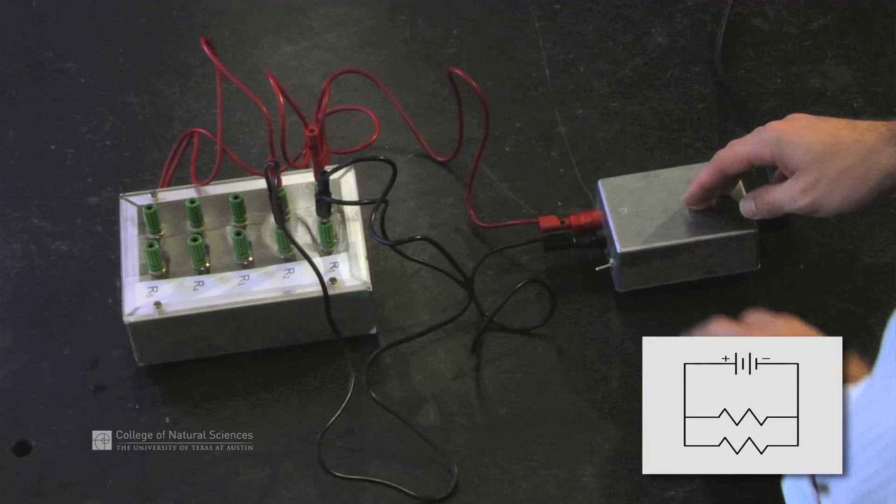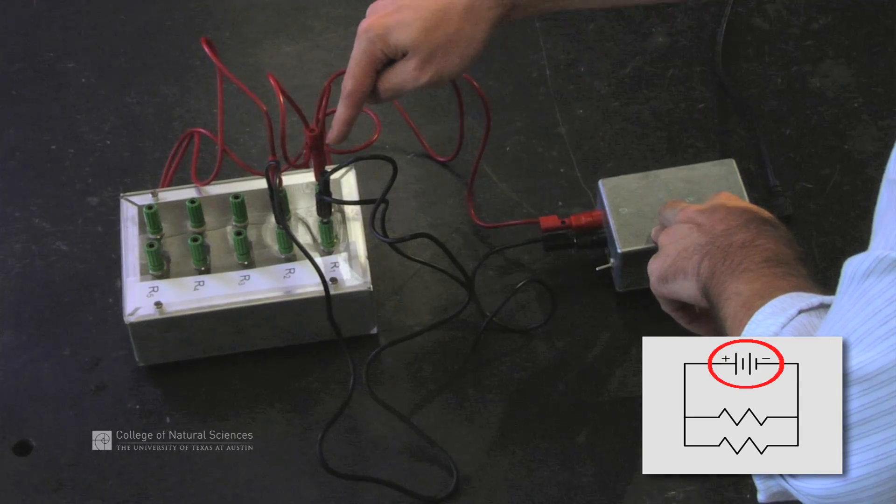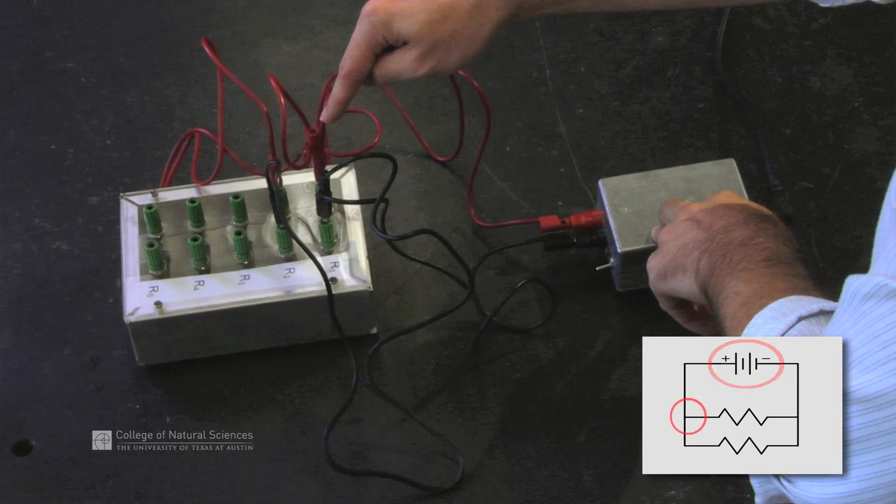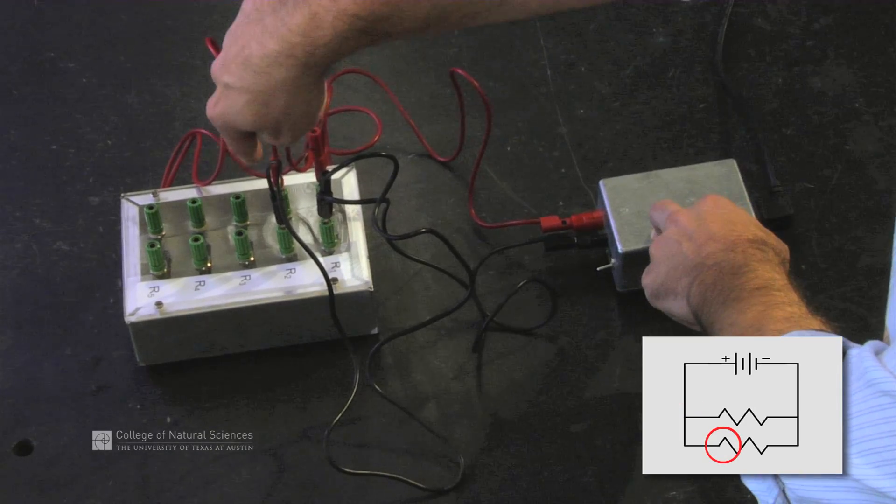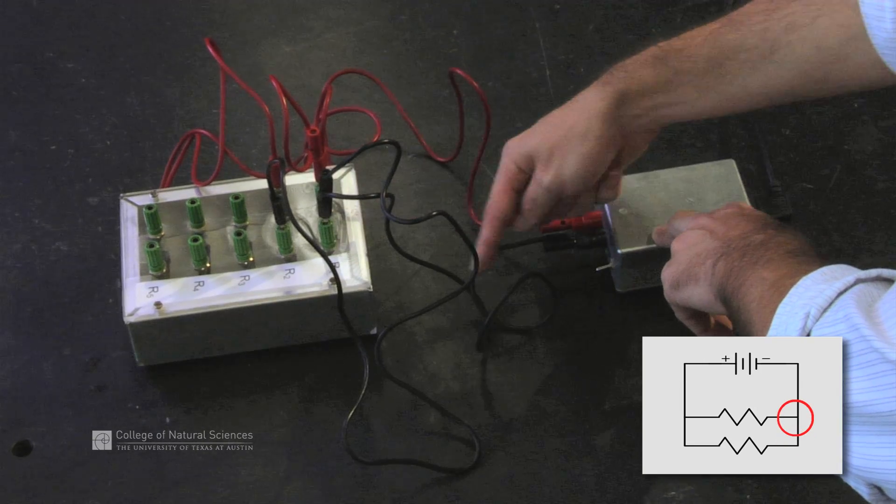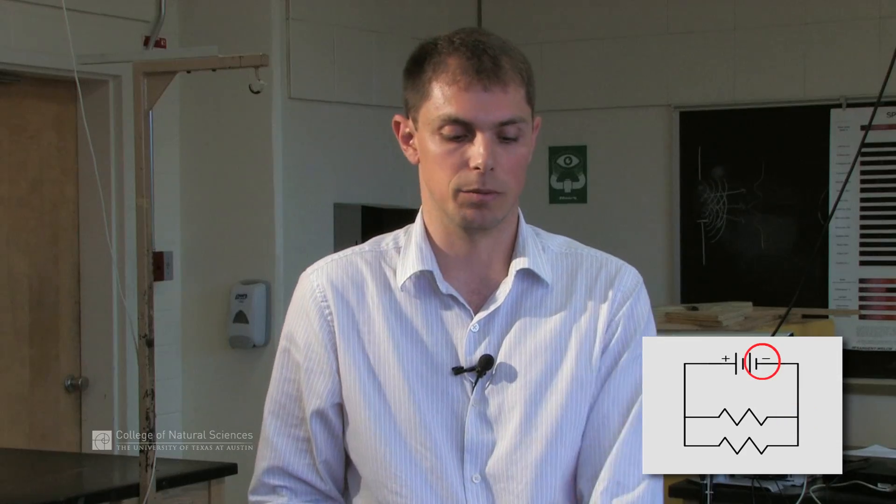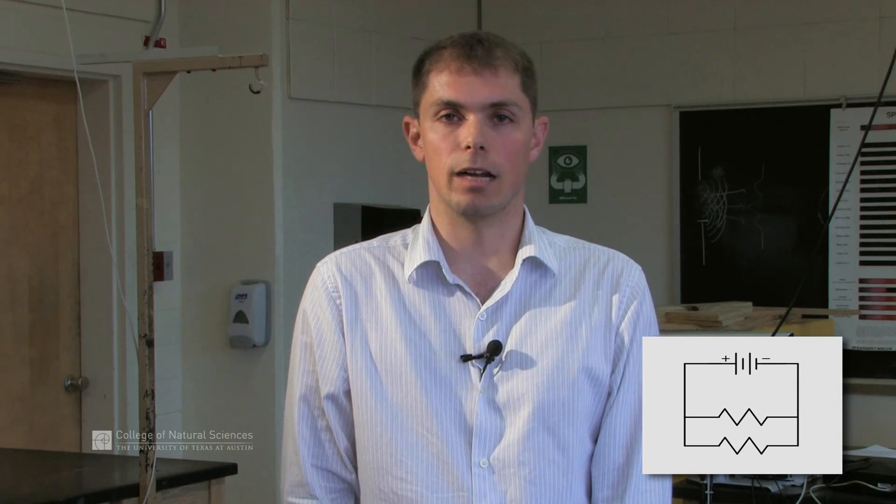The second loop that we can look at starts at the power supply, goes from the first wire to the second wire. The second wire goes to the second resistor, through the resistor, back through the wire, connects to the second wire, and back to the power supply. We see that we have our circuit set up correctly.